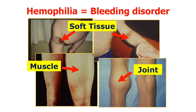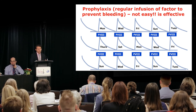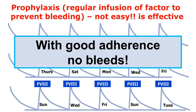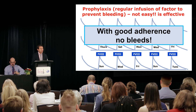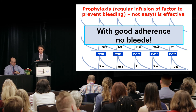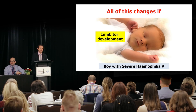As you all know, hemophilia is a bleeding disorder. Patients with hemophilia get many different types of bleeds, and this happens quite often. Of course, prophylaxis changes everything. Prophylaxis, defined as the regular infusion of factor to prevent bleeding, is not easy, but it's effective. With good adherence to prophylaxis, patients with hemophilia can essentially go through their life with very few or possibly even no bleeds. But all of this changes if a patient with severe hemophilia, particularly severe hemophilia A, develops an inhibitor.